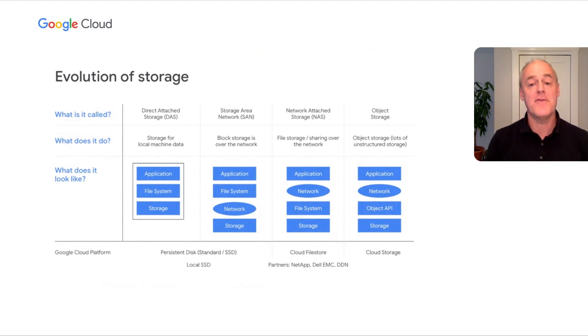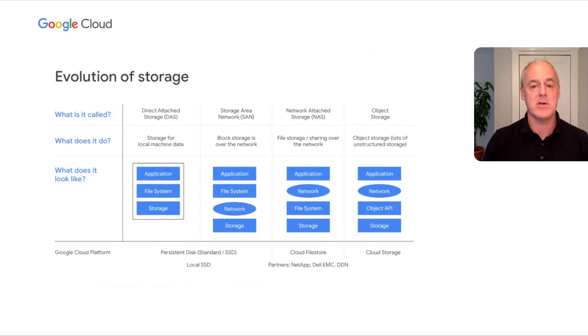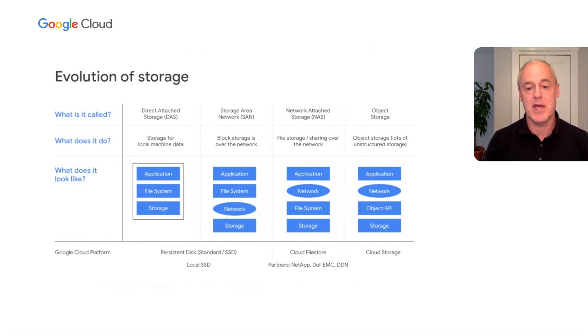Another very popular form of storage that many people will have heard of is file shares — file storage. Here you can imagine there's a remote file server for your organization, and the application or device remotely accesses data over that file share. Many users can access that file system over the network and then access that data in their application. It's more complicated to build because you have to deal with many users accessing the same data, and you have to build various locking and other semantics to manage that. But it's a very popular and powerful form of storage.